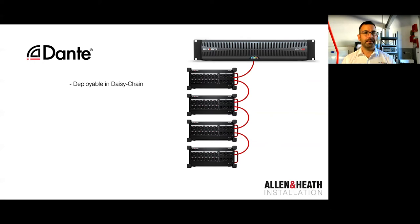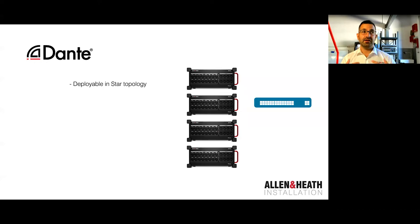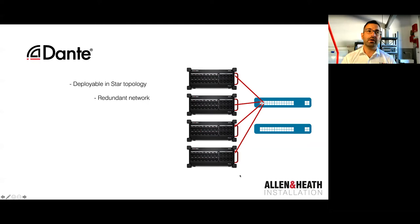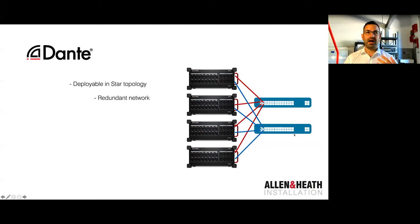If you want to work in a safer way, we can deploy Dante in star topology — from a central node, which is a network switch, running a single cable to each device in a star. This means that if any cable is ruptured, only that one device is lost and everything else continues to work. Star topology also allows us to set up a redundant network, running primary and secondary cables to each device. If there's any failure, whether with the cables or the network switch, the secondary network takes over automatically without any dropout, giving completely continuous audio and data to all devices.